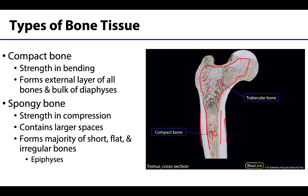Compact bone is most present in the middle portion of the long bone — the shaft or body — whereas spongy bone is much more prevalent on the ends of long bones. We're looking at the proximal portion of the femur here. Spongy bone can also be found in higher frequencies in short, flat, or irregular bones. Importantly, there is always a layer of compact bone around the edges, even surrounding the spongy bone.